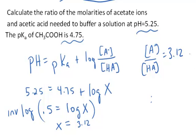So for example, I could have a buffer solution where the anion of the acid, the acetate ion, was 3.12 molar and the acid was 1 molar.